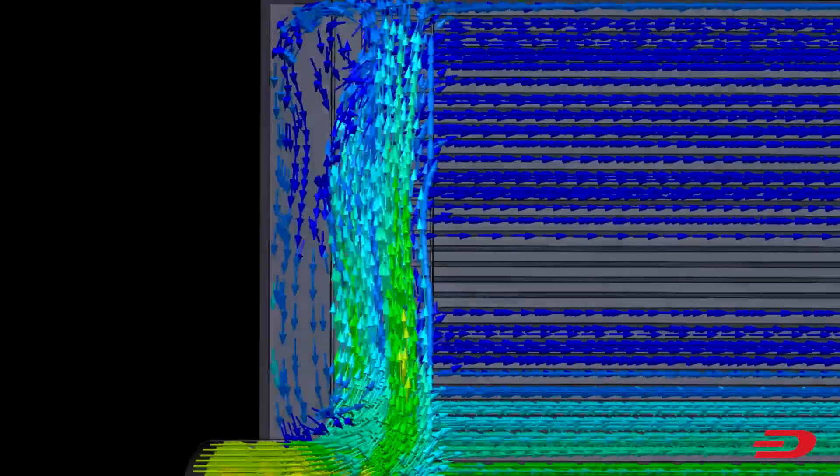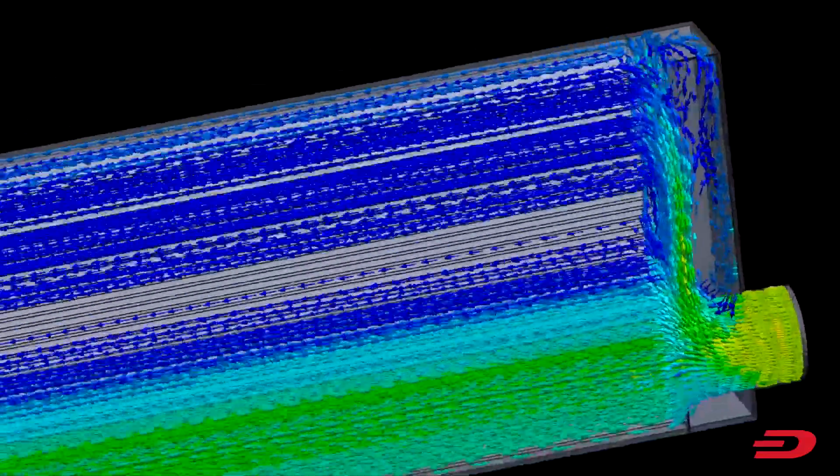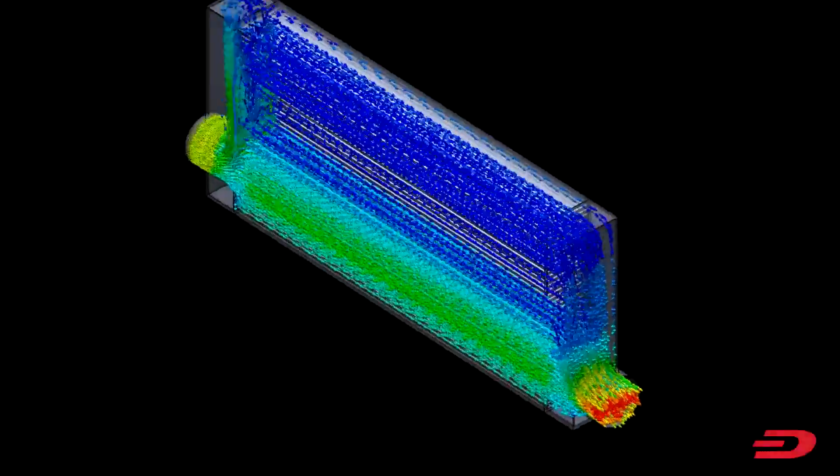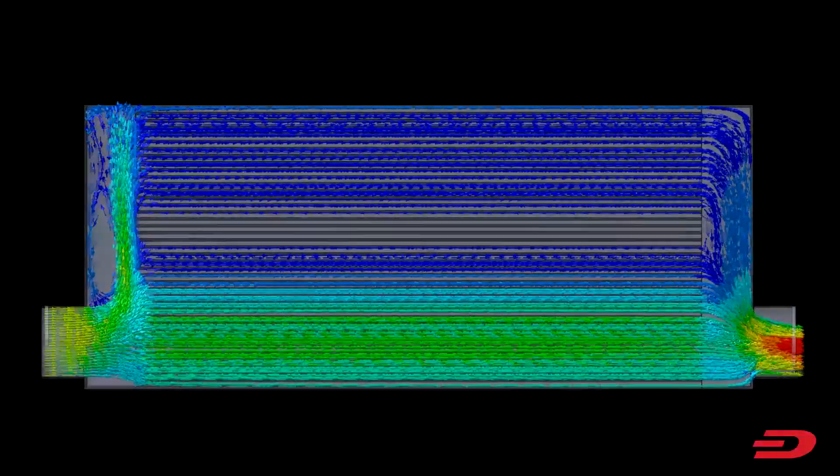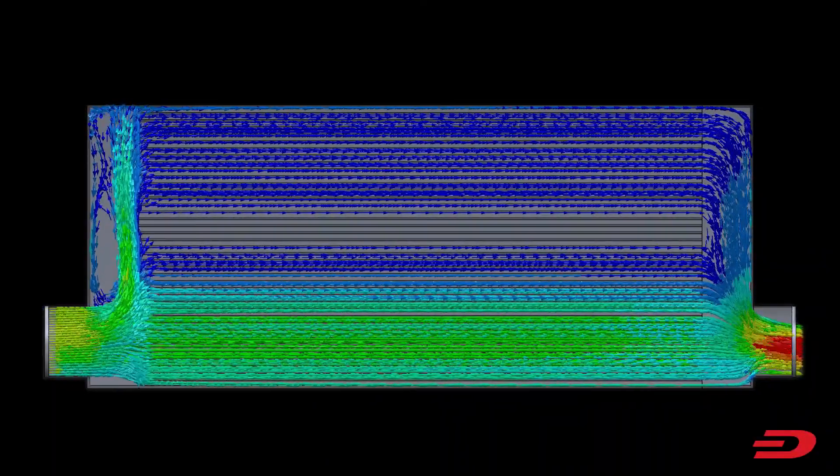We can see though, that the square design has resulted in turbulence forming in the inlet end tank. Hot air that should be traveling through the core is instead circulating around the end tank. This turbulence is stopping air from traveling through the middle of the core and wasting potential cooling capacity.